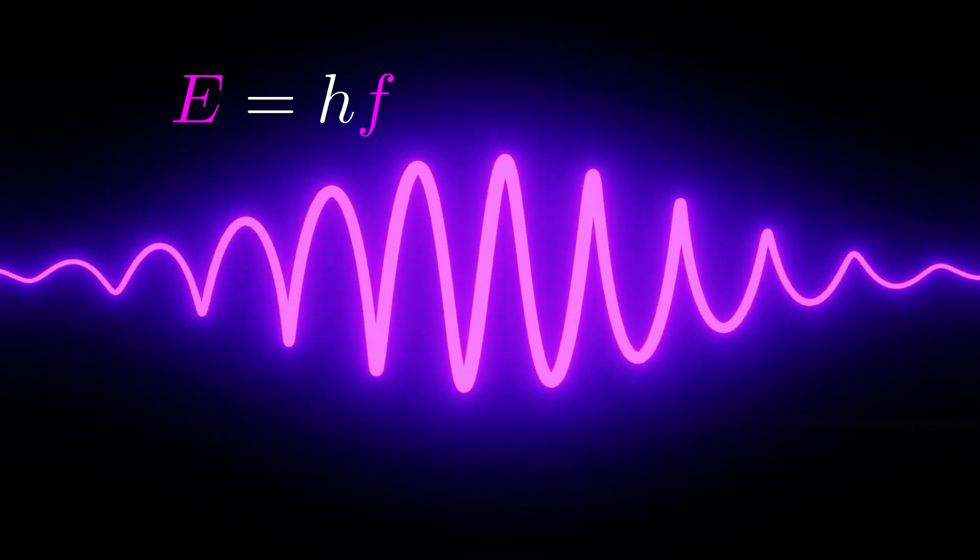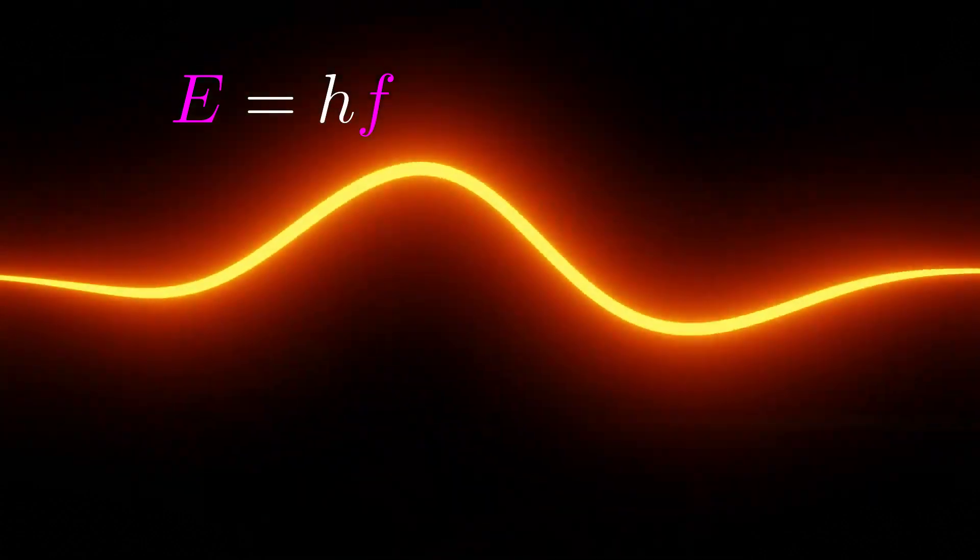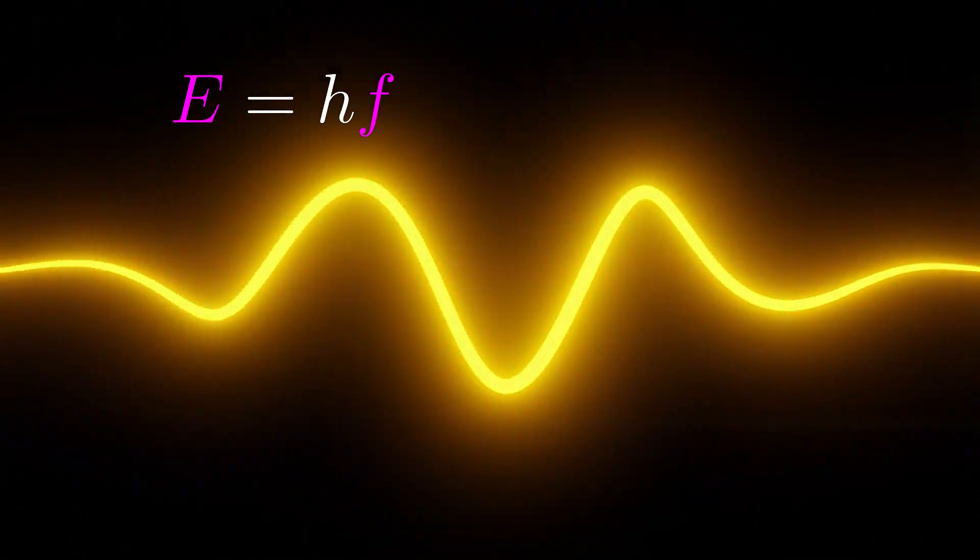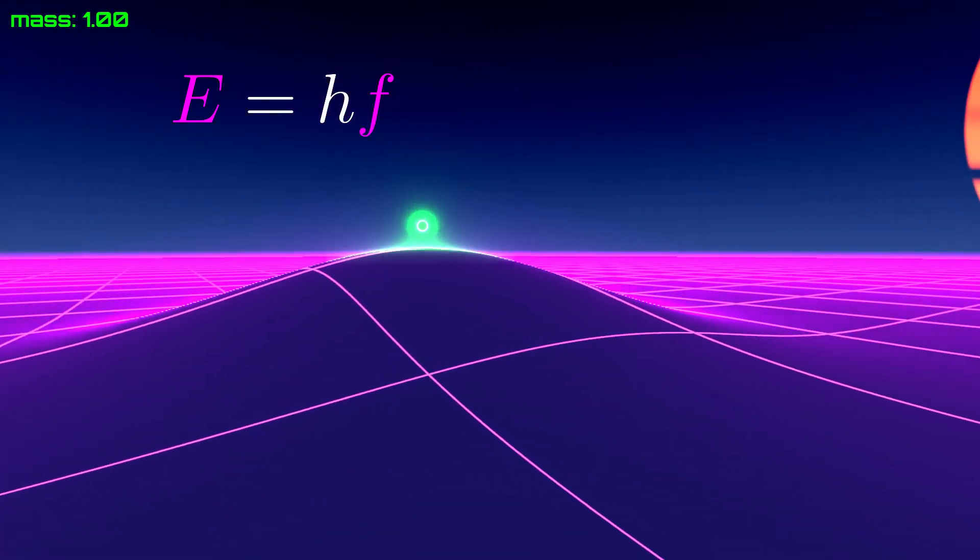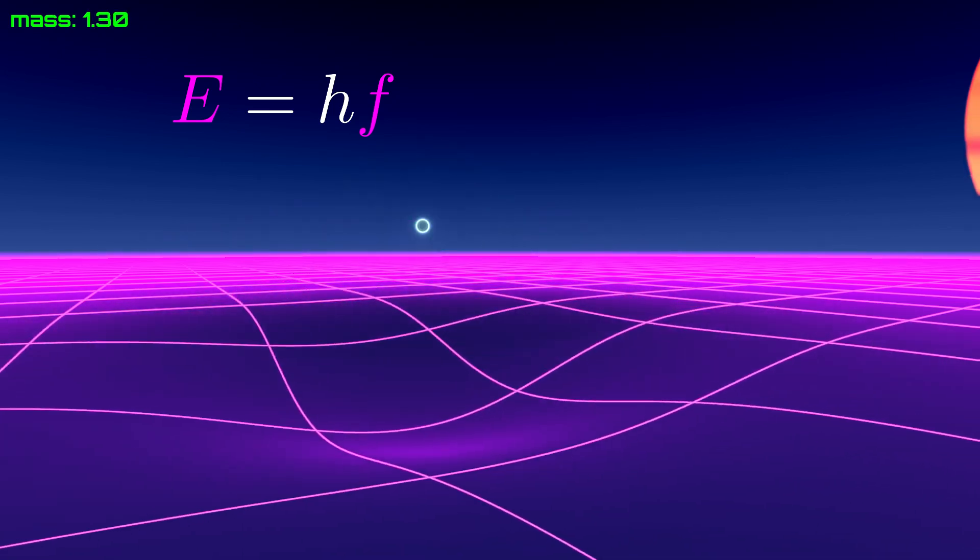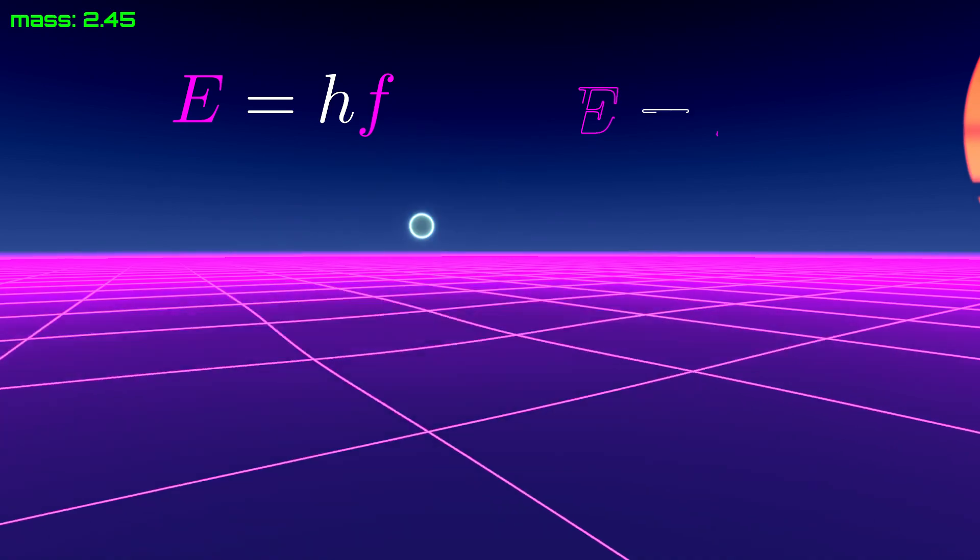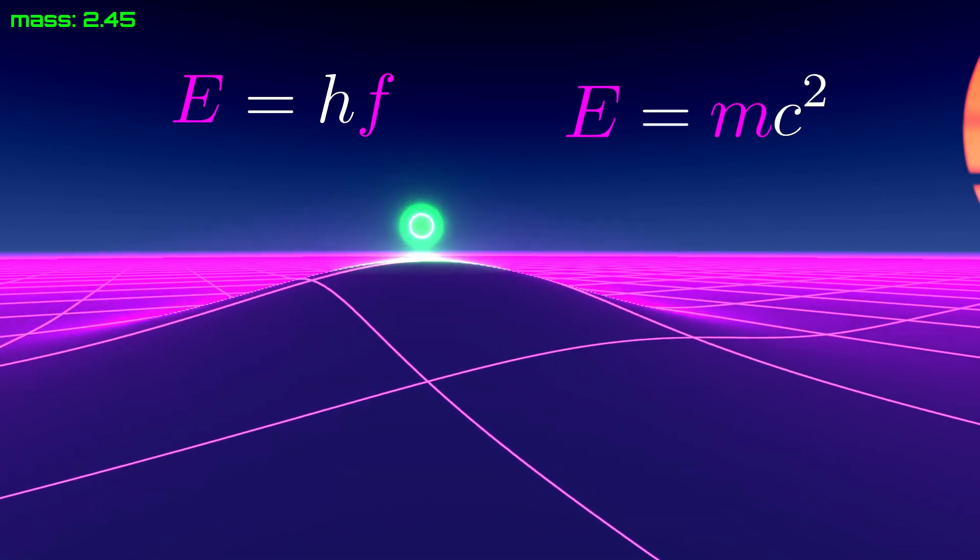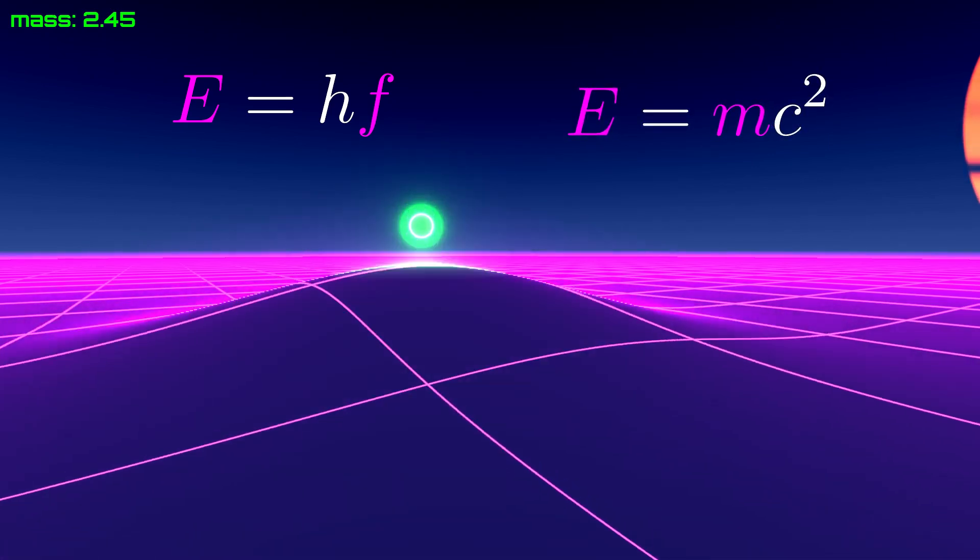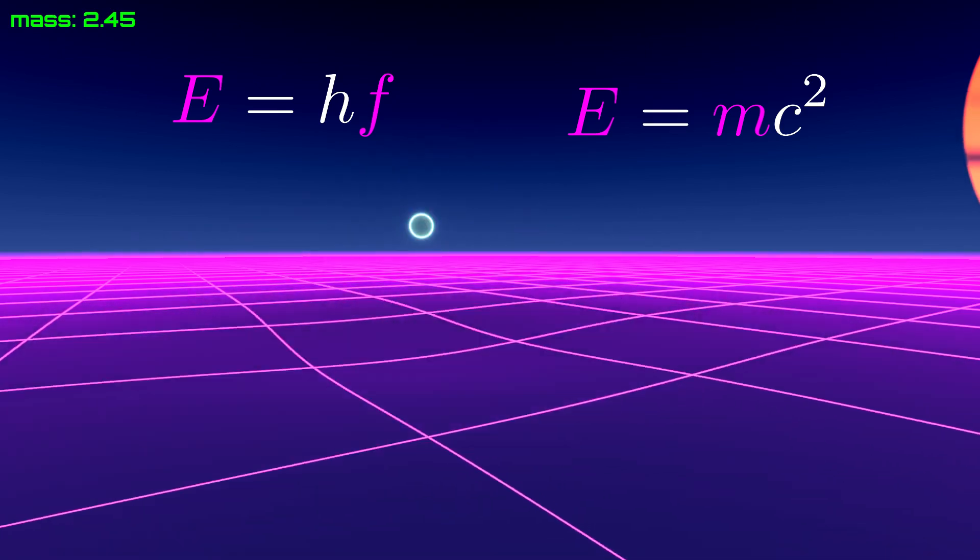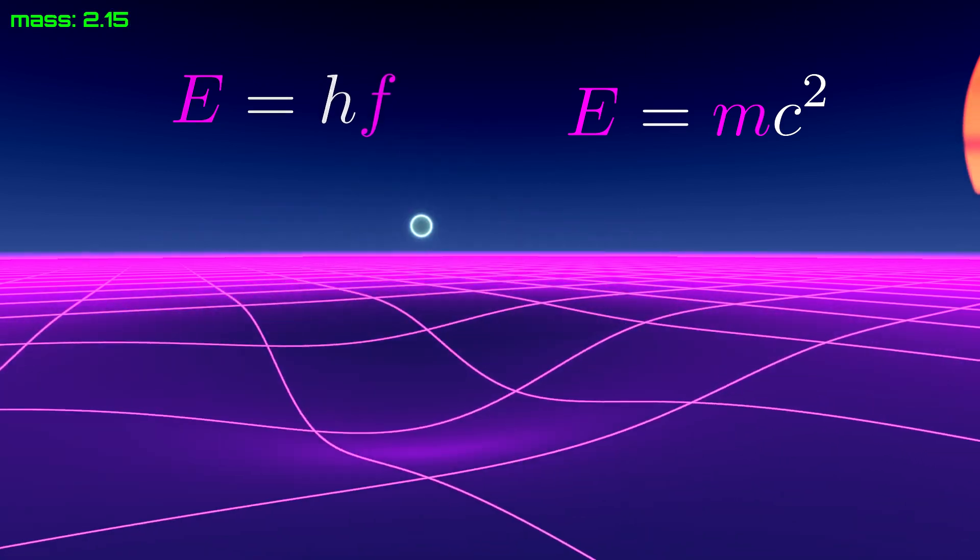Okay, so maybe energy also determines the frequency of our mass particle. What is the energy of a mass particle? For this we cite yet another famous formula from Einstein's theory of relativity, which says that the energy is equal to the mass times the speed of light squared.